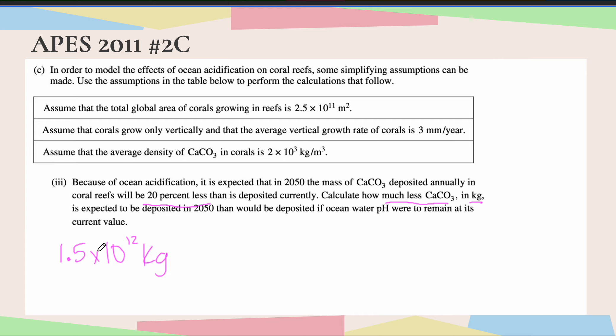Again, that's annually or per year. And if we were to deposit 20% less than that, we would just take this and multiply it by 0.2 to get that 20%. All I'm going to do is I'm going to think of 1.5 times 2, which is 3, but really this is 0.2. So that would actually give me 0.3 times 10 to the 12th kilograms of CaCO3.